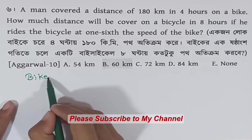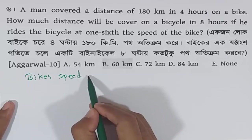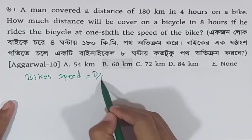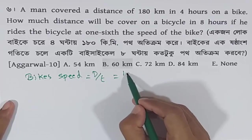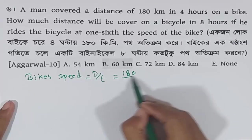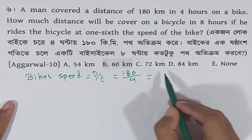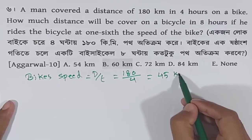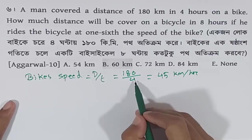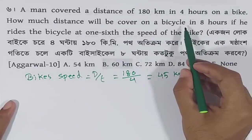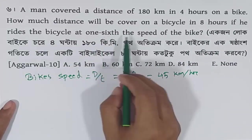We will find the speed of the bike: distance divided by time. The distance is 180 km and the time is 4 hours. So the speed of the bike is 45 km per hour.